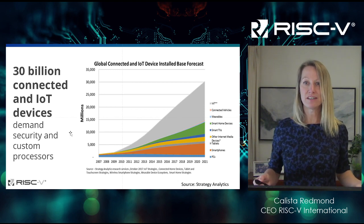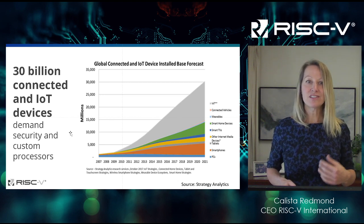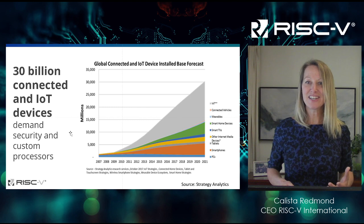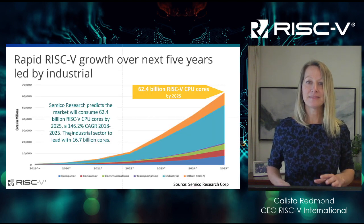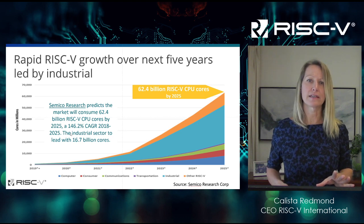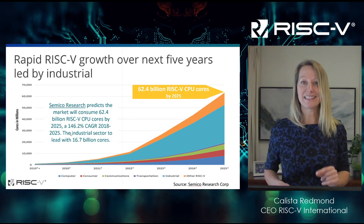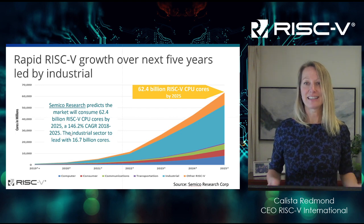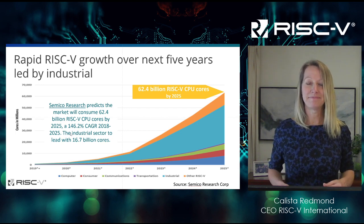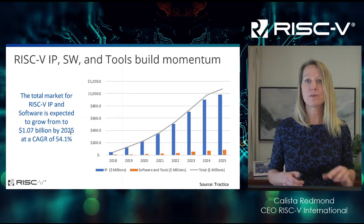There is room for innovation and room for many approaches here, and an open approach with RISC-V is really starting to take hold — 30 billion connected and IoT devices by 2021, and we are well on our way on this trajectory. Semico predicts 62.4 billion RISC-V CPU cores are going to be in market by 2025, with industrial being the leading area. Looking at the full ecosystem beyond IP — and there's lots of IP licensing to be had here for core design, SOC design, and systems — we see tremendous opportunity.